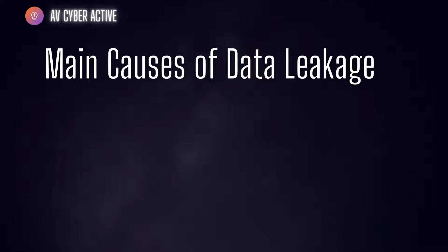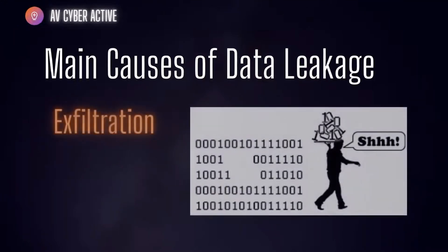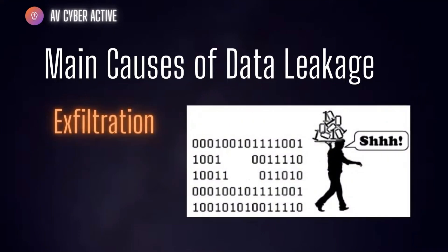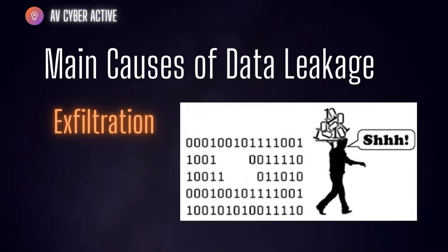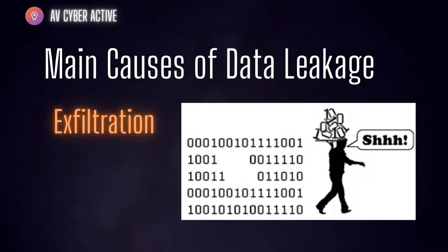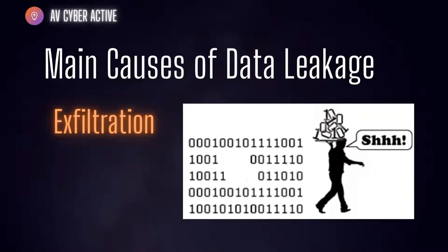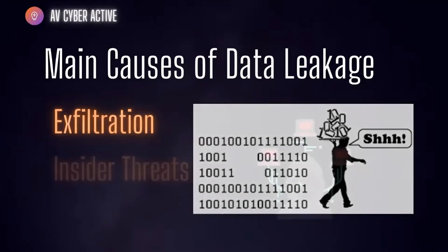What are the main causes of data still leaking outside your organization despite having DLP? The first cause is exfiltration — the act of stealing or transferring data from a device or network to the outside. It can be conducted by outsiders or insider threats performing cyber attacks like phishing and DDoS.